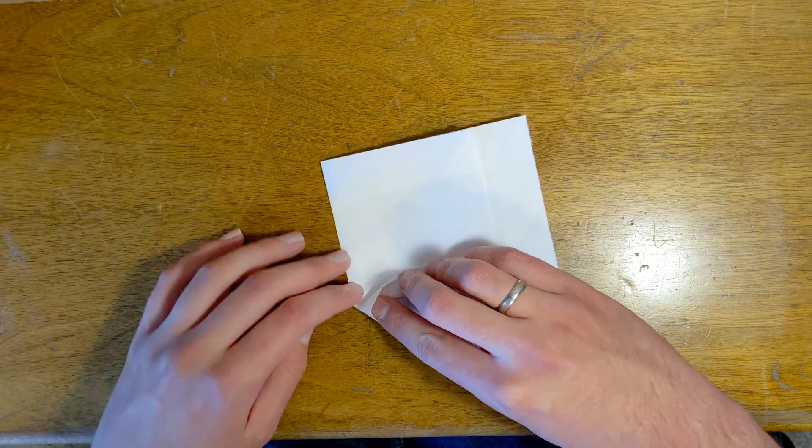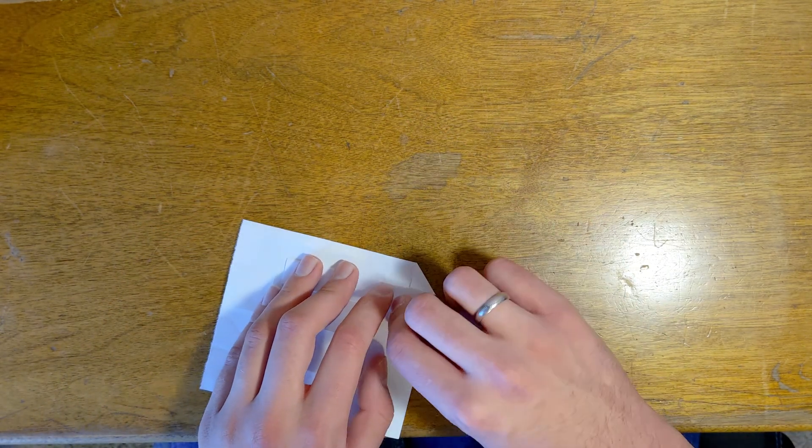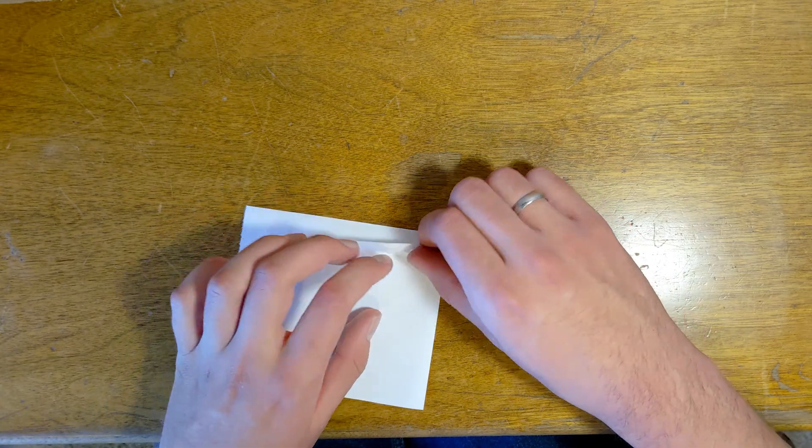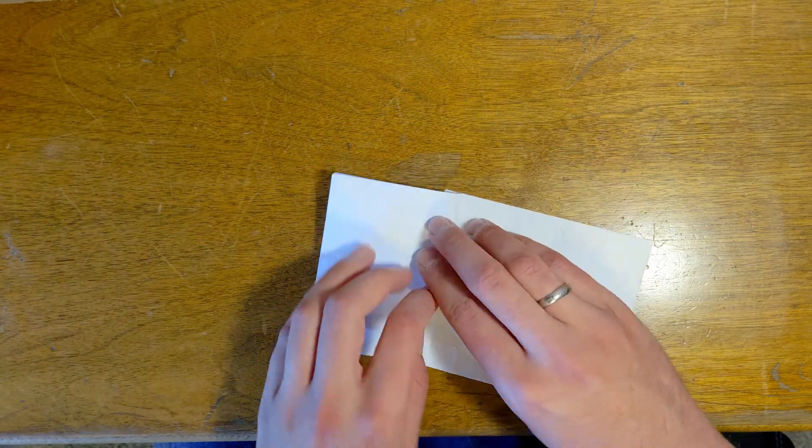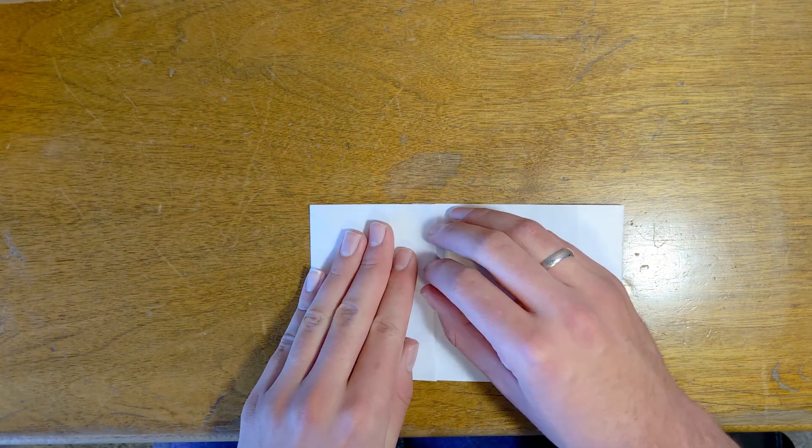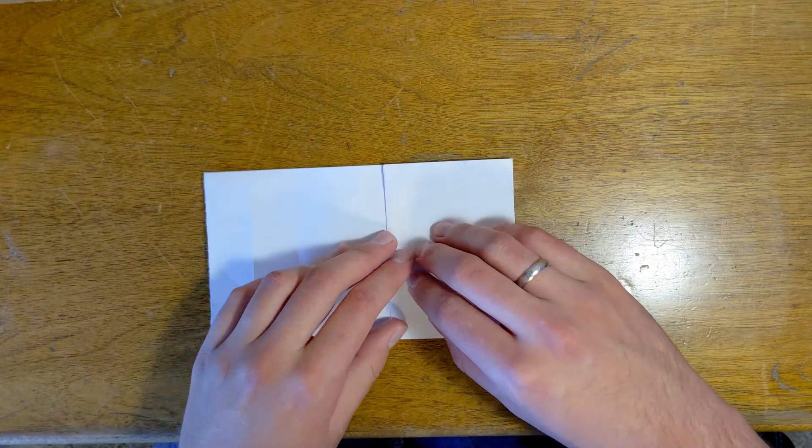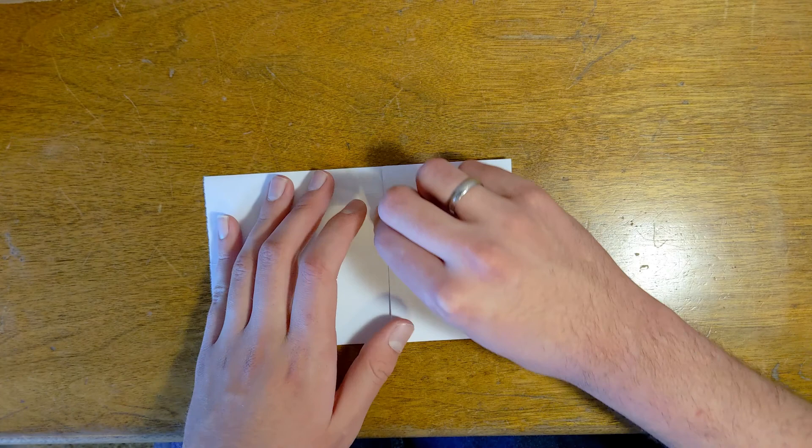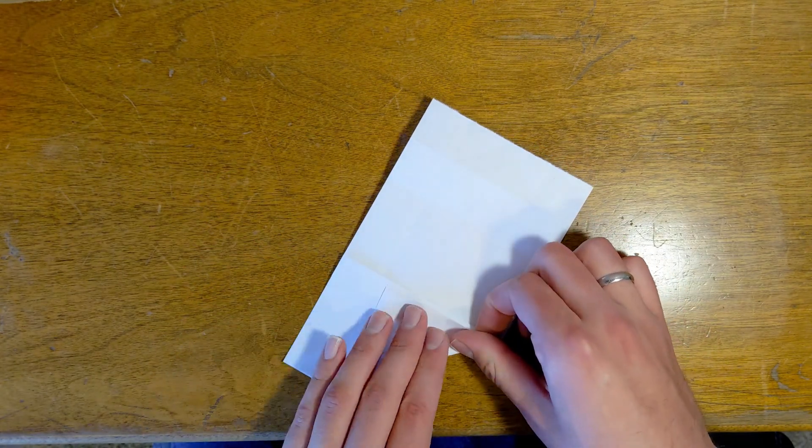Then you'll fold this flap up and squash this little triangle part here. Fold it up and then fold this flap as straight as you can and then fold this flap up.